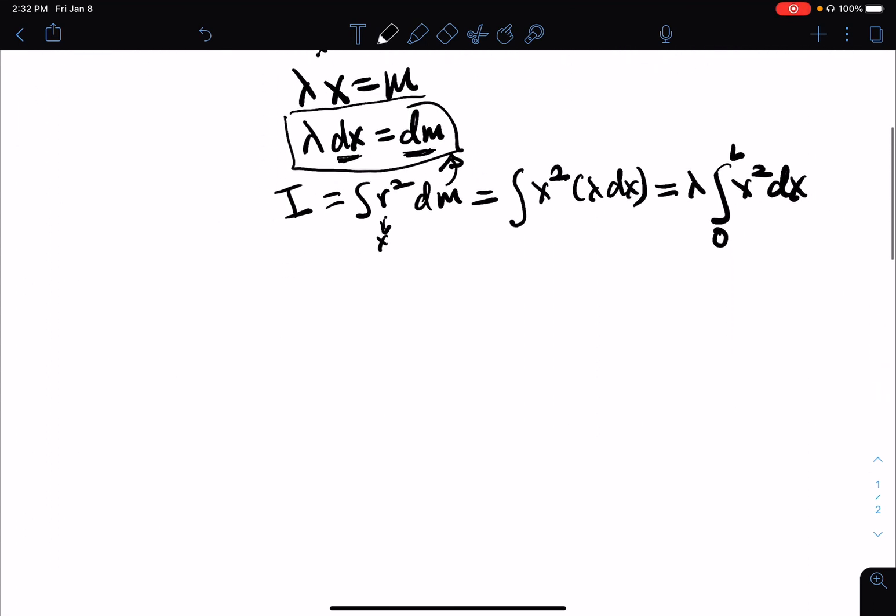So this is a pretty straightforward power rule integral. I equals lambda times one third x cubed from zero to L. And we can factor out the three, which I like to do, and that becomes then L cubed minus zero, so it's just L cubed.